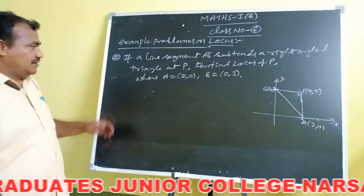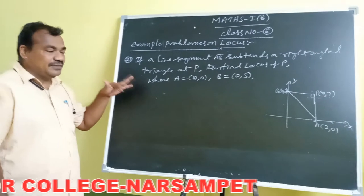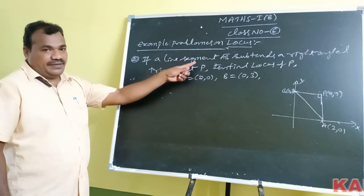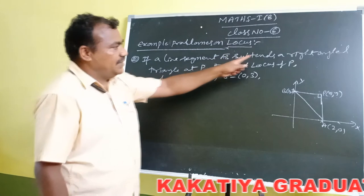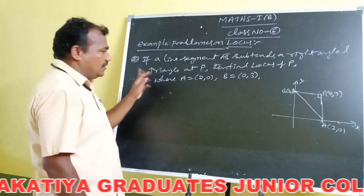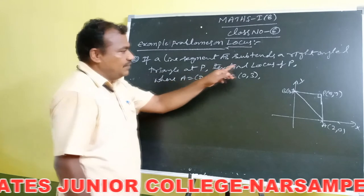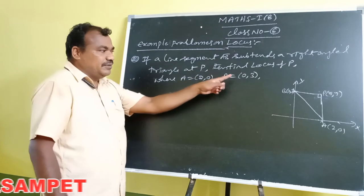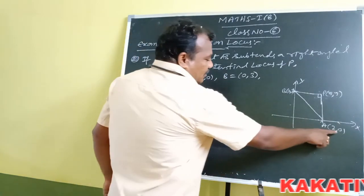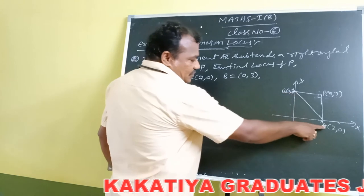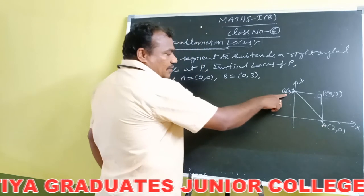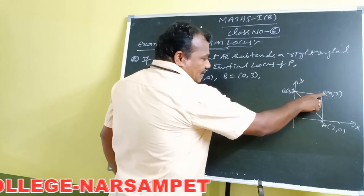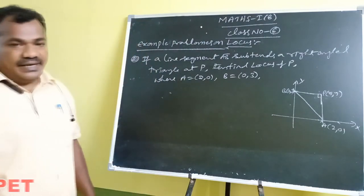Now students, this is the second example. If a line segment AB subtends a right angle at P, find the locus of P, where A is equal to (2, 0) and B is equal to (0, 3). Note that A is a point on the x-axis and B is a point on the y-axis. The line segment AB subtends a right angle at point P, meaning APB is a right angle triangle.